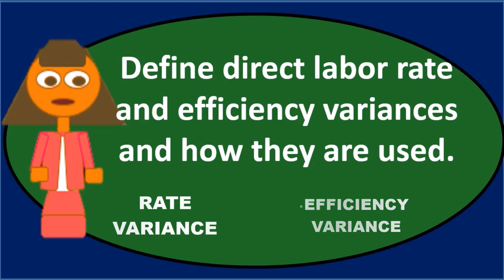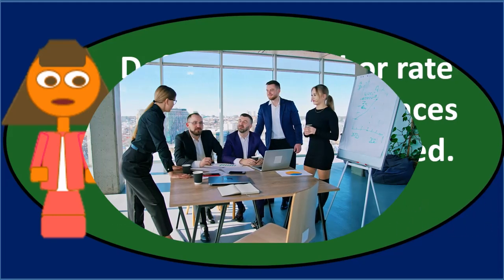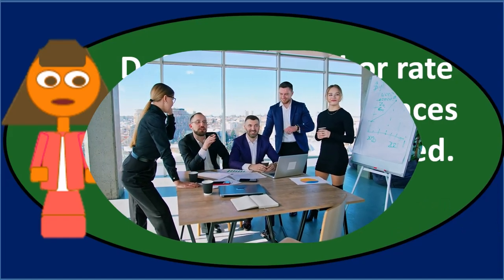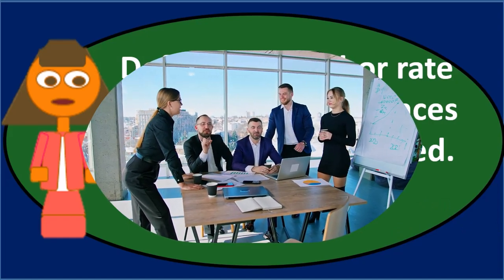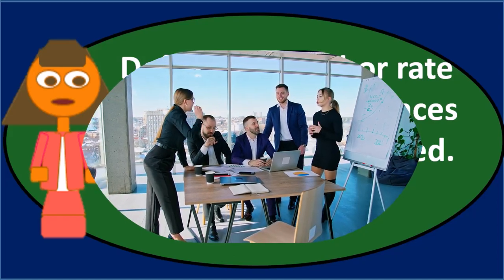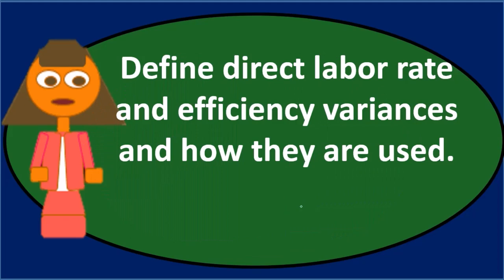The rate variance is geared towards how much we're paying people on an hourly basis. In order to put together the budget or the standards, we came up with a standard rate. We want to ask: is our standard rate in alignment with the actual rate, and how much of the difference in the direct labor line item resulted from that difference in rate?